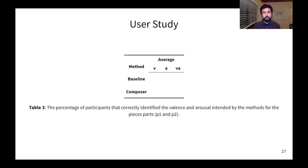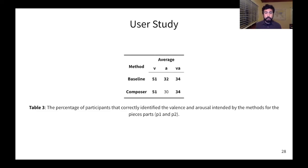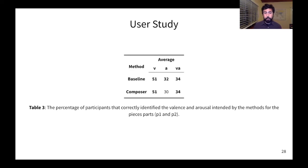This table shows the average results of our user study. And here we report the average for valence, arousal, and valence and arousal combined. Looking at the results, we can see that both methods pretty much perform the same. So we can conclude that human subjects were able to identify emotions in pieces generated by composer as accurately as they could identify emotions in pieces composed by human composers.